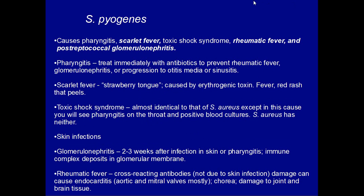Streptococcus pyogenes causes lots of different conditions: pharyngitis, also known as strep throat, scarlet fever, toxic shock syndrome, rheumatic fever, and post-streptococcal glomerulonephritis, as well as skin infections. You want to treat pharyngitis immediately to prevent rheumatic fever, glomerulonephritis, or progression to otitis media or sinusitis. Someone comes in with a very sore throat — you can see the exudate in the back of their throat — and you should start them on antibiotics immediately to prevent progression to rheumatic fever or glomerulonephritis.